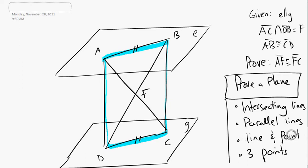All right, four ways of proving a plane. If you have intersecting lines, that's a plane. If you have parallel lines, that's a plane. If you have line and a point, that's a plane. If you have three points, that's a plane. Lauren, which one of those is satisfied? Intersecting lines. We have intersecting lines. That means we have a plane.